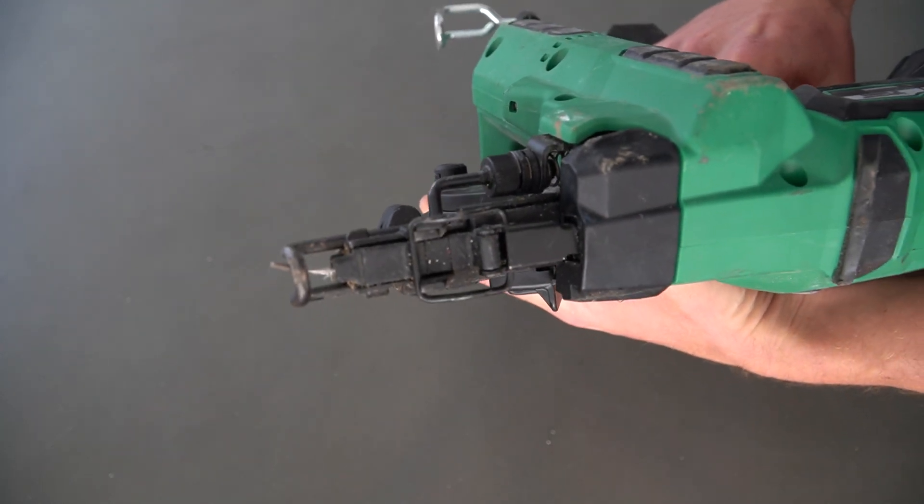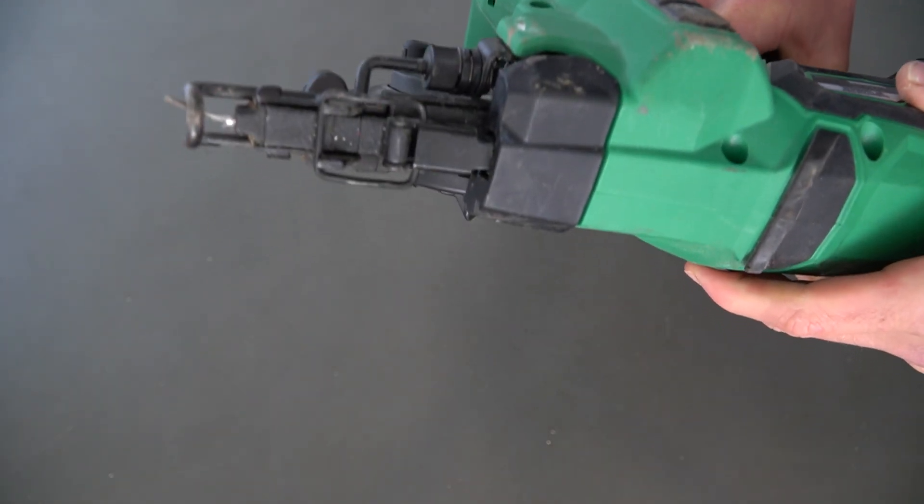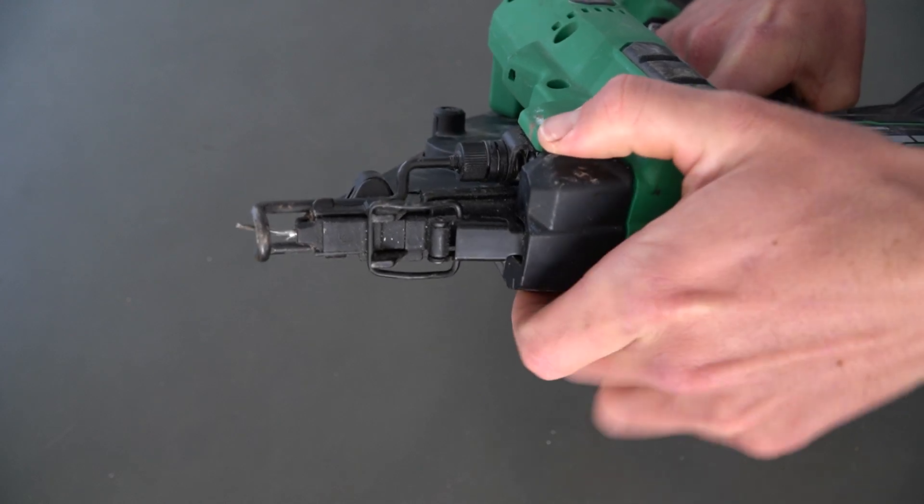For that done, we'll turn the gun over and have a look at the top of it here. And what we can do at the top of the gun here is pinch the black part here at the top and pull that up.